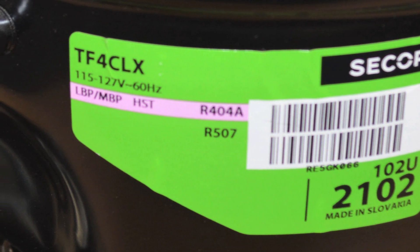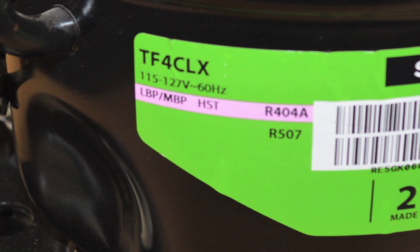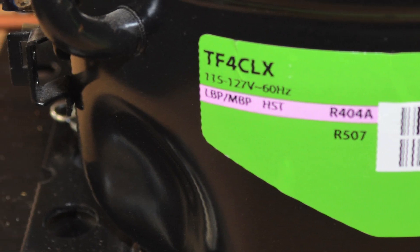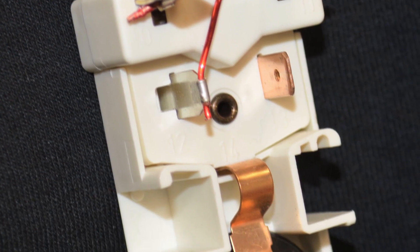The specific model we'll be using for our demonstration is a Danfoss TF4 CLX compressor, which uses a current relay to energize the start winding.